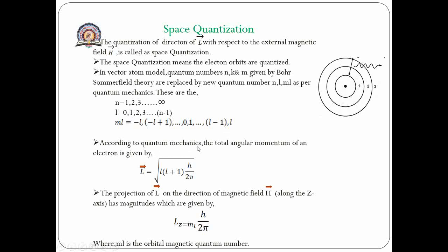According to quantum mechanics, the total angular momentum of an electron is a vector quantity given by: L-bar = √(l(l+1)) × (h/2π), where h is Planck's constant and small l is the orbital quantum number. The projection of L-bar on the direction of magnetic field H-bar along the z-axis has magnitude given by: Lz = ml × (h/2π), where ml is the magnetic quantum number.